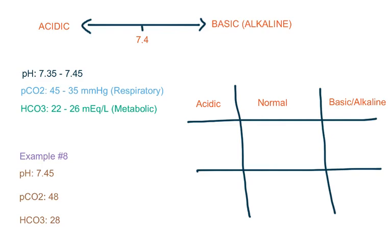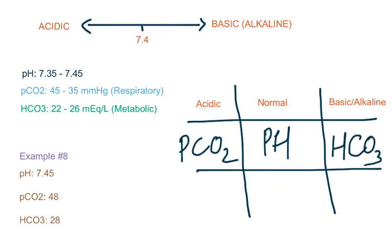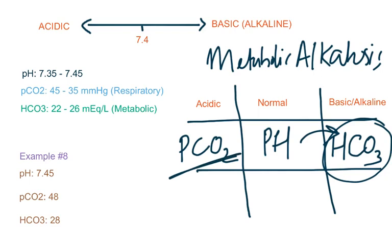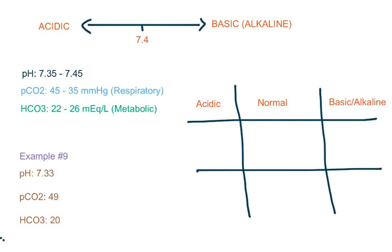Let's do another example. pH is 7.45, which is normal. pCO2 is 48, which is more than 45, so it is on the acidic side. Bicarb is 28, which is more than 26, so it is on the alkaline side. Since pH is 7.45 it is more towards the alkaline side, so this is alkalosis — metabolic alkalosis — being compensated by CO2. So this is fully compensated metabolic alkalosis.